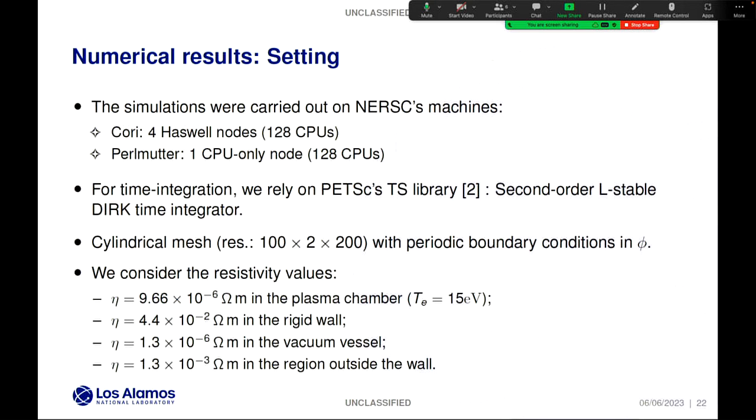To assess the performance of our solver in solving the quasi-static plasma dynamics model, we run some simulations on NERSC machines, Cori and Perlmutter, using 128 CPUs on both. For time integration, we use this second-order L-stable DIRK time integrator from PETSc's TS library. All the simulations are run on a cylindrical mesh that has a resolution of 100 grid points in the R direction, two grid points with periodic boundary condition in the phi direction, and 200 grid points in the Z direction. A minimal number of grid points was taken in the phi direction because we're just considering the axisymmetric case. Finally, we have the following resistivity values for the different subdomains in our computational domain.